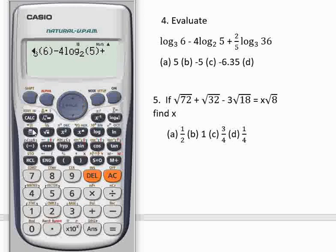You have plus a fraction, which is 2, forward button, 5, forward button again, log base 3, forward button, 36. Then it's your part, minus 6.35, and that is option C.